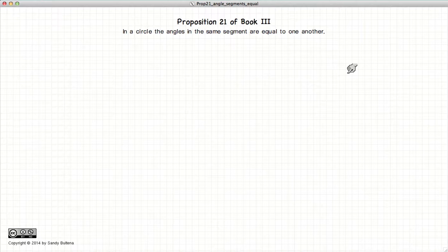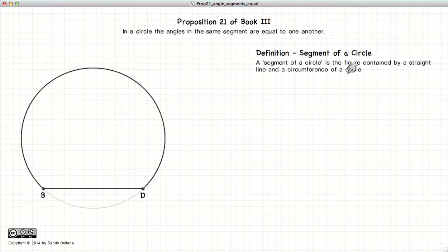Now before I begin the presentation, we need some definitions. So the first thing is a segment of the circle. A segment of a circle is basically a circle defined by the circumference and a line that intersects the circle at two points. This line here, BD, is referred to as the base of the segment.